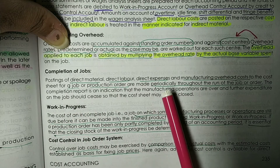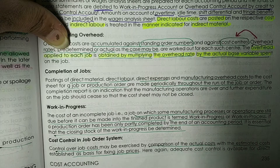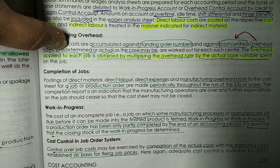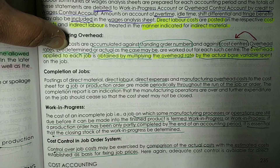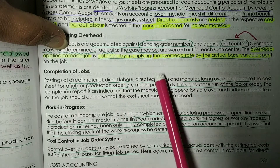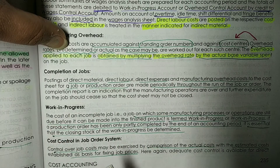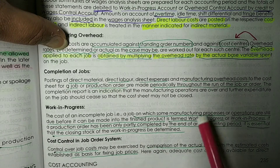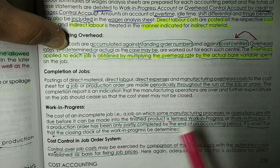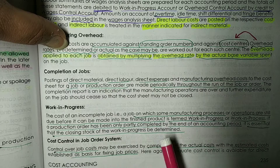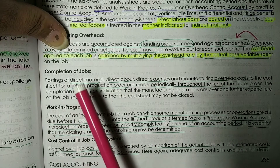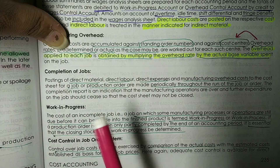Periodically, throughout the run of the job — whatever time it takes — all these expenses will be posted in the cost sheet. Finally, a completion report is prepared, which is an indication that the manufacturing operation has been finished and that expenditure charged to the job should now stop. This is the completion of the job report.